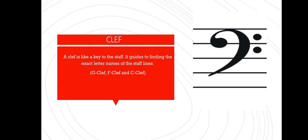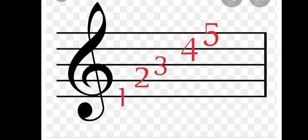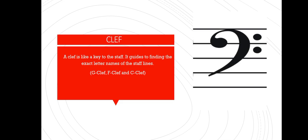The clef guides us in finding the exact letter names of the staff lines. We have looked at the number names — one, two, three, four, and five. But these lines also have other names which are letters ranging from A to G: A, B, C, D, E, F, G. And again from G it goes back to A. These letter names A through G are given to the lines according to the clef that is found in the staff. The clef guides us in finding the exact letter names — not the numbers but the letters.